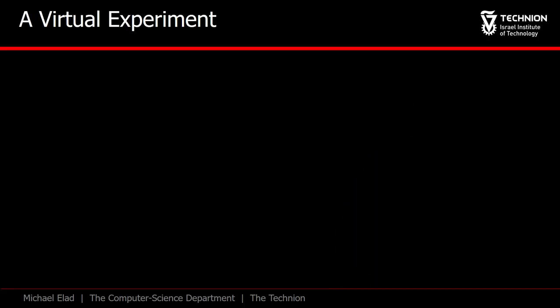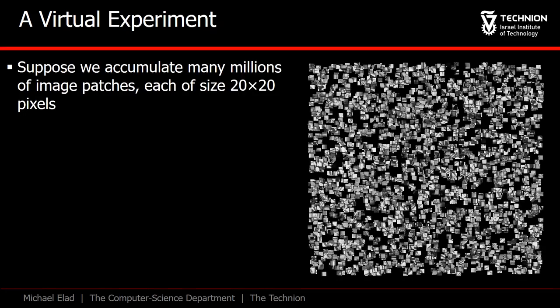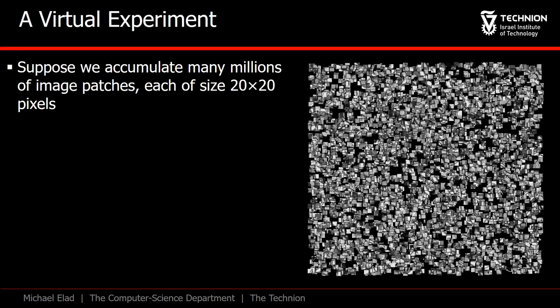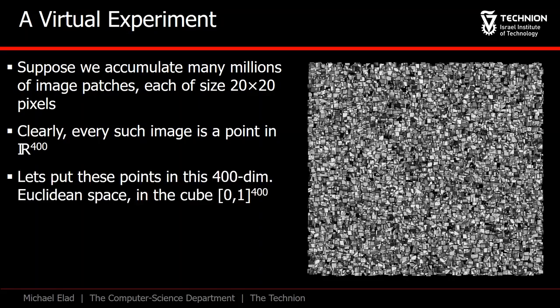We start with the virtual experiment, in which we accumulate many image patches taken from various images. Let's assume that this set includes millions of patches of size 20 by 20 pixels each. Every such patch is a point in the 400 dimensional Euclidean space. And so, all these millions of patches create a cloud of such points in this space.